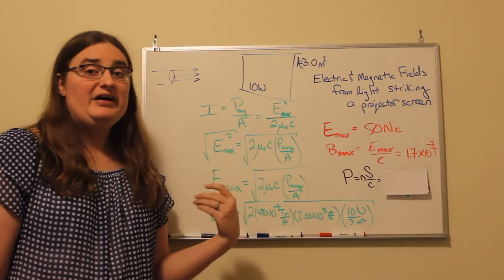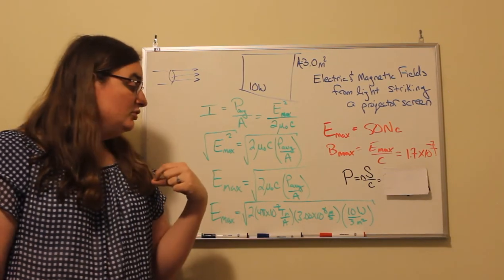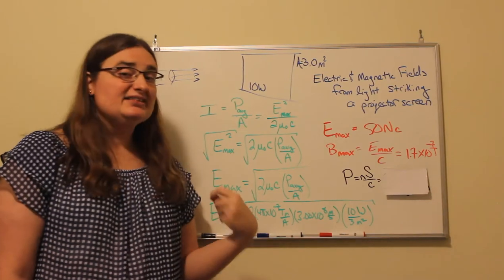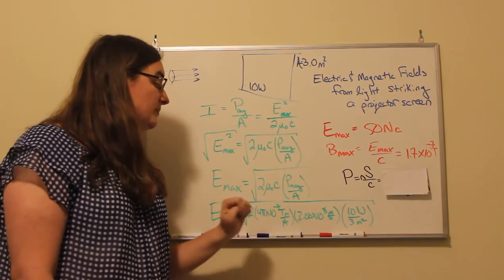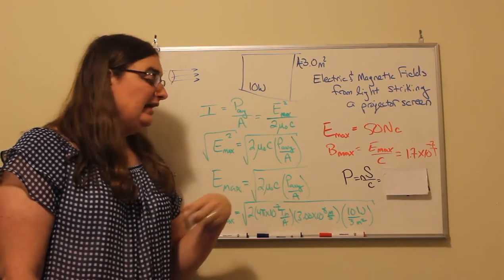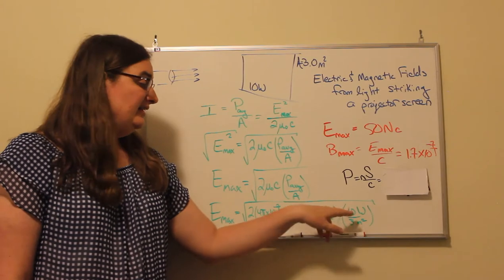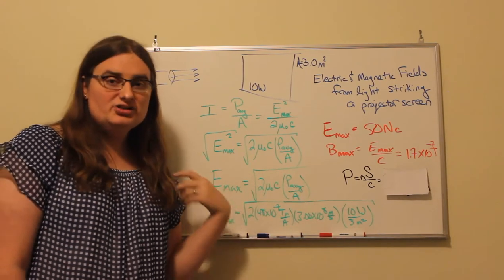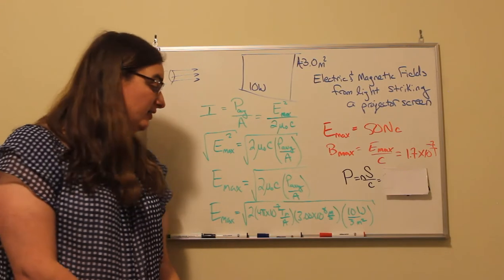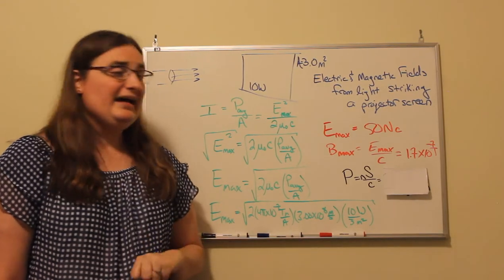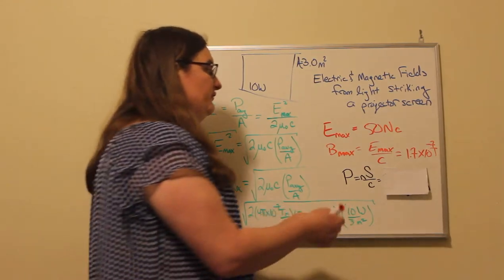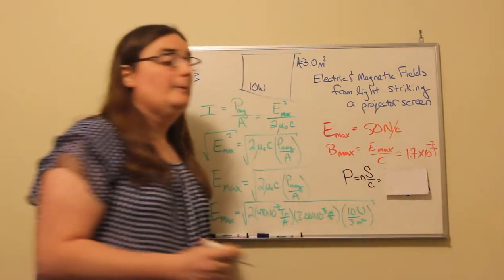So plugging in the values that we have, mu naught is going to be 4 pi times 10 to the minus 7 tesla meters per amp. The speed of light in the vacuum is about 3 times 10 to the 8 meters per second. And our intensity is 10 thirds of a watt per meter squared or 3.33 watts per meter squared. So when I calculate that out, that gives me a peak electric field of 50 newtons per coulomb.